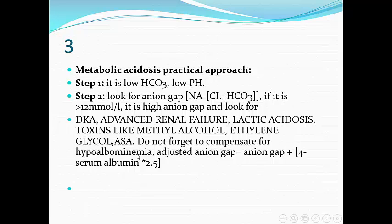Before leaving this point, please don't forget to correct for hypoalbuminemia in high anion gap. After measuring your anion gap, do the adjusted anion gap, which equals: anion gap plus 4 times (normal albumin minus patient albumin) multiplied by 2.5, to get the real anion gap for the patient. So: first, metabolic acidosis; second, go to the anion gap.